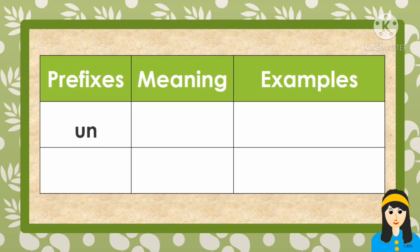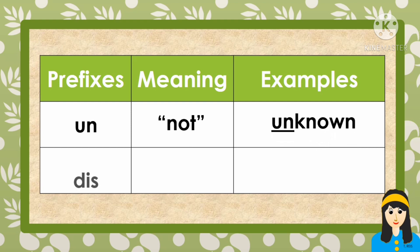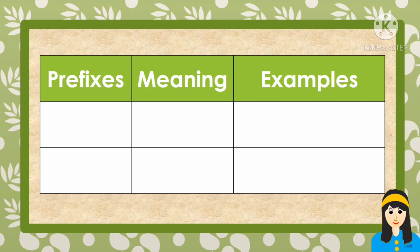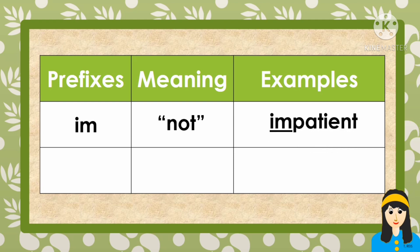First one is un. The meaning of un is not, and the example word is unknown. The second is dis. The meaning of dis is not, and the example word is disapproves. Another prefix is im. The meaning of im means not, and the example word is impatient. The next is in, and the meaning of in is not. The example is incorrect.